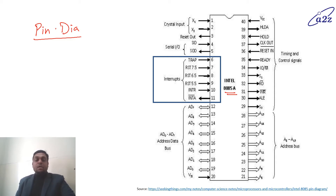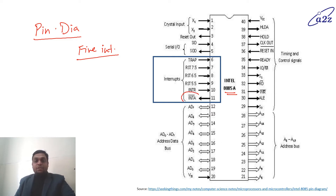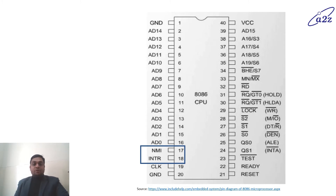In the 8085 microprocessor, there are a few interrupts denoted in the diagram. Pin numbers 6, 7, 8, 9, and 10 are the interrupts. There are 5 interrupt signals in 8085, one interrupt acknowledge signal, and one signal used as an interrupt acknowledge. In 8086, only two interrupt signals are there — pin number 17 and 18 in the 8086.